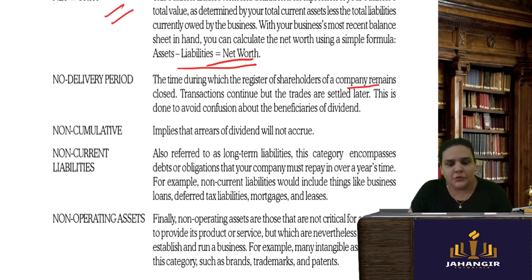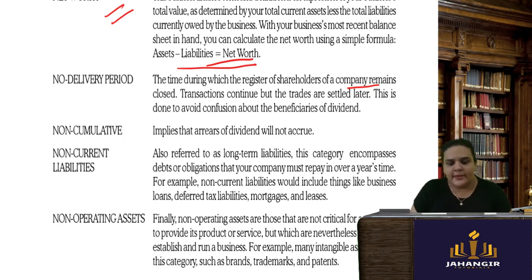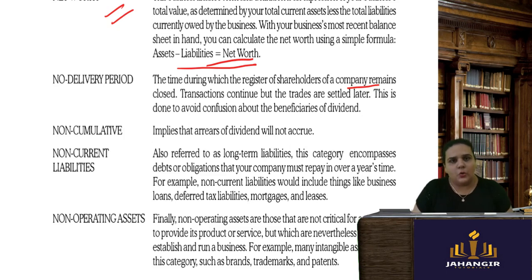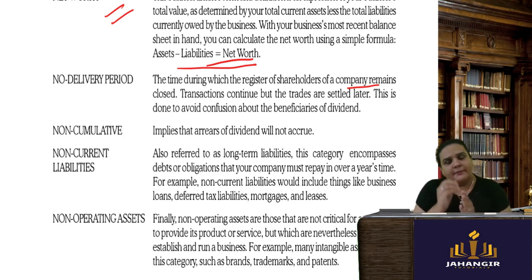No delivery period is the time during which the register of shareholders remains closed. As per law, companies are required to close their registers periodically to know who holds shares. Transactions continue but trades are settled later — this is done to avoid confusion. For example, when a company wants to pay dividends, it closes the register so it knows exactly who the beneficial holders are on that date and to whom dividend should be paid.